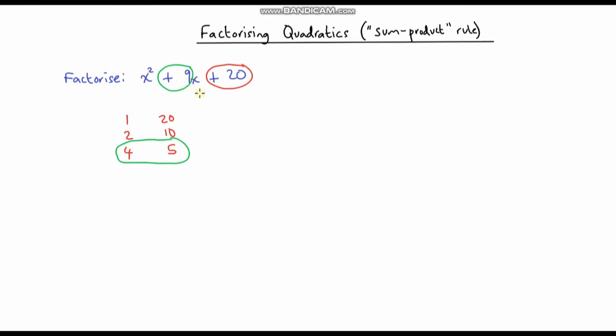So to factorize this quadratic we would write x plus 4 in one set of brackets and then x plus 5 in our other set of brackets. All we're doing is putting these numbers into these brackets, and this is our answer. You can always check your answer by expanding out and you should be left with this original expression here.